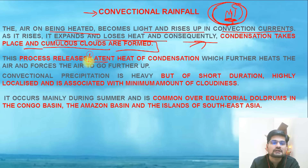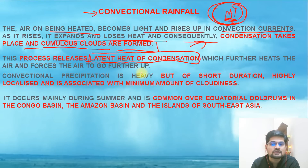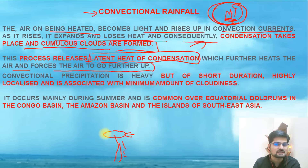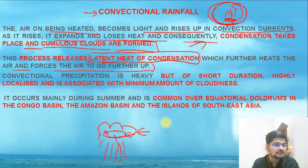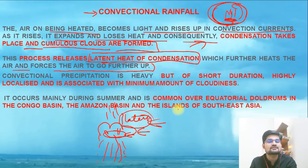An important element here is latent heat of condensation — as discussed in the atmospheric stability and instability chapter. This latent heat is released during condensation, which further heats the air and forces it to rise higher. So hot air rises, picks up moisture at the dew point where saturation occurs, cloud forms, and then rainfall happens. The latent heat released in the adiabatic process leads to further rise of the air.